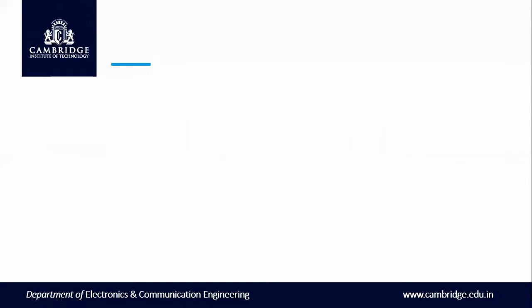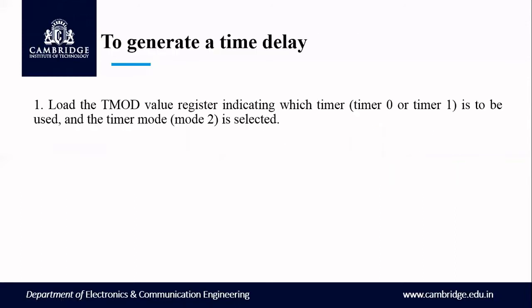Let us see the steps to generate a time delay and how to write assembly language code for generating a square wave or pulse with the desired delay. First, load the TMOD register value indicating which timer you are using — timer 0 or timer 1 — and select mode 2. For that, the value will be either 02H for timer 0 mode 2, or 20H for timer 1 mode 2.